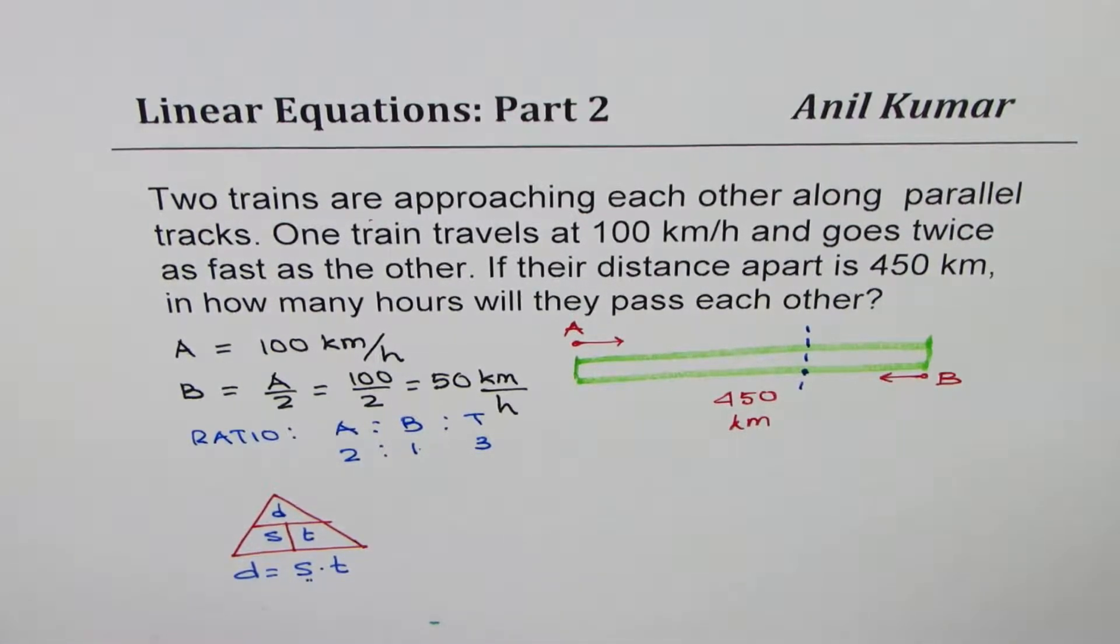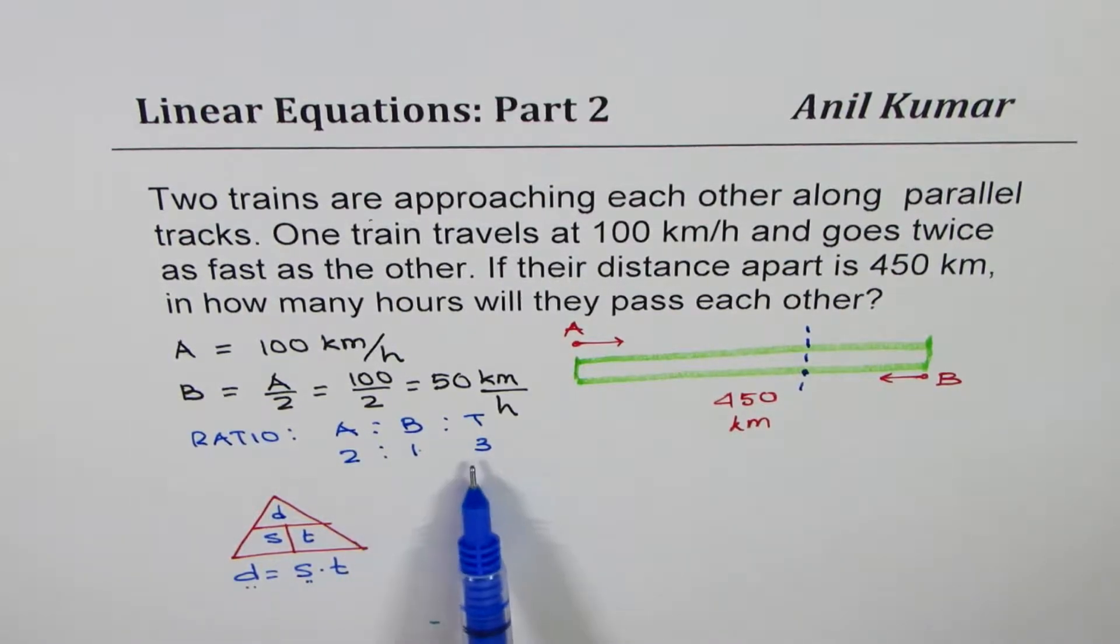Since the speed is different, distance will be different. Since the speed is twice, distance covered will be twice. Distance covered will be twice by A than with B. So the distance will be 2 is to 1. So what we can do here is, now we know, we'll do ratios.